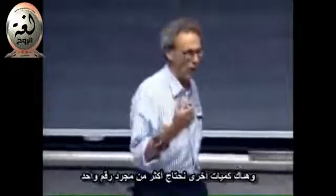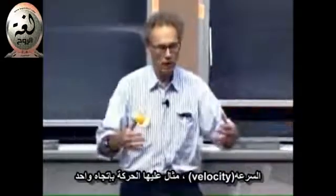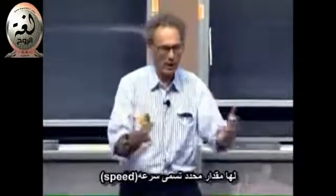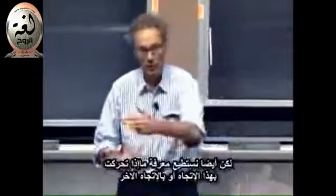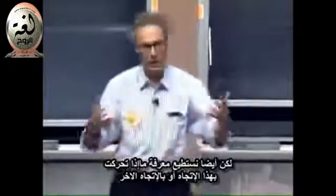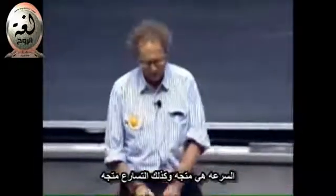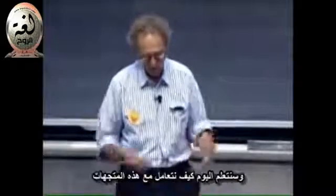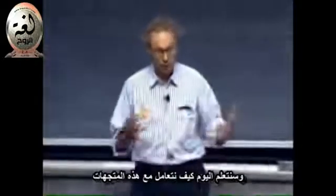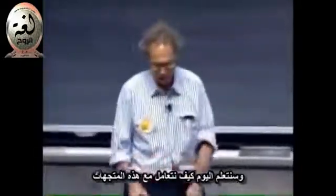There are others where you need more than one number. For instance, on a one-dimensional motion, velocity has a certain magnitude - that's the speed - but you also have to know whether it goes this way or that way, so there has to be a direction. Velocity is a vector, and acceleration is a vector. And today, we're going to learn how to work with these vectors.